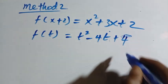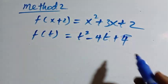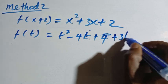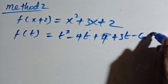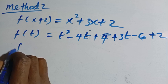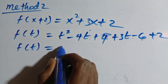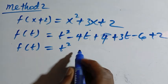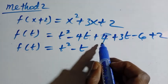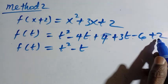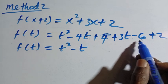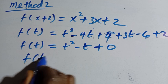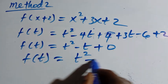We have plus 4. And also we have 3x here. So when we add together, this is plus 3t minus 6, then plus 2. So here we have f of t equals t squared. We have minus 4t and here is plus 3t, so that gives us minus t. And we have 4 plus 2 minus 6, which gives us 0. Then we have f of t equals t squared minus t.